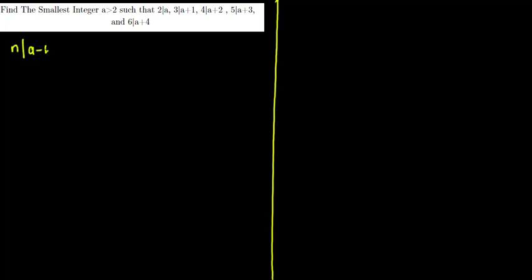You should know that if n divides a minus b, this implies that a is congruent to b mod n.